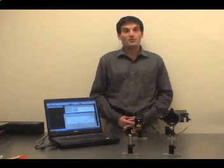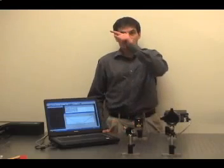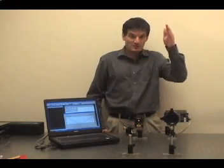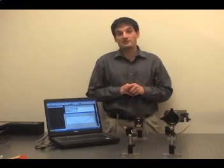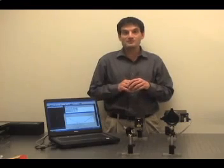Like traditional techniques, we measure M squared by creating a beam waist and then measuring the beam size at different locations along the beam waist. Unlike traditional techniques, we perform this analysis simultaneously on every single beam size measurement. How is this done?